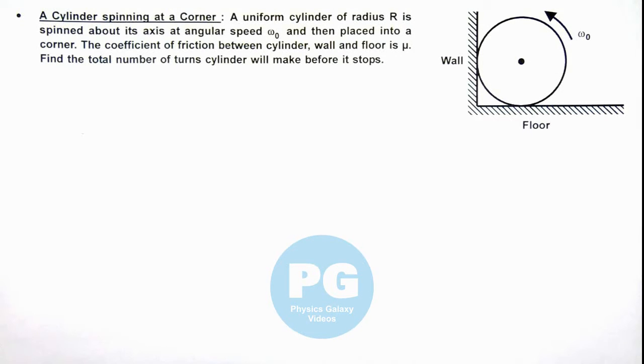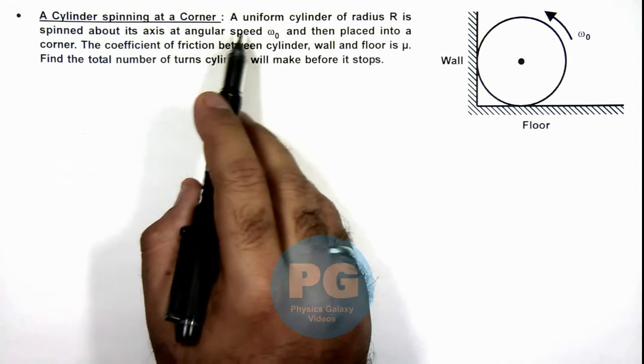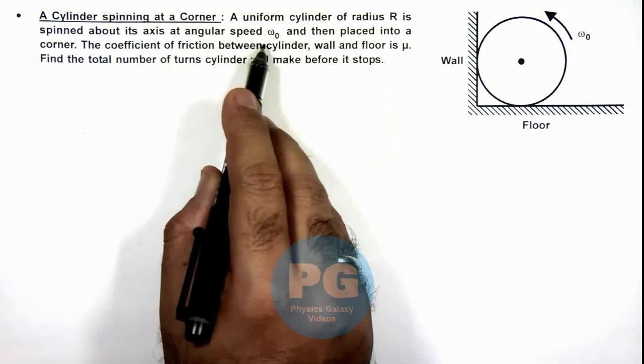In this illustration we'll analyze a cylinder spinning at a corner. We are given that a uniform cylinder of radius R is spun about its axis at angular speed omega not.